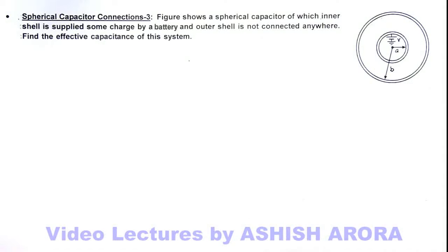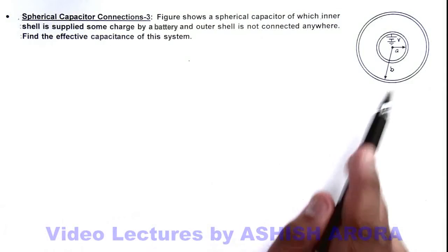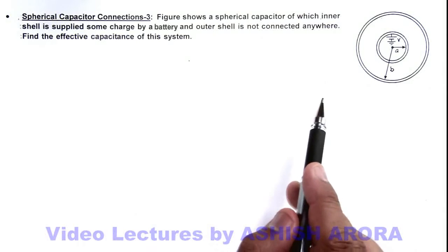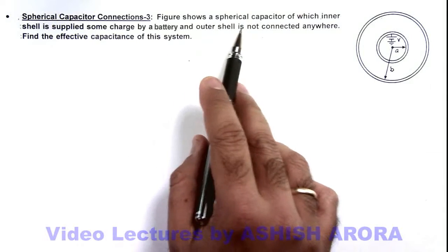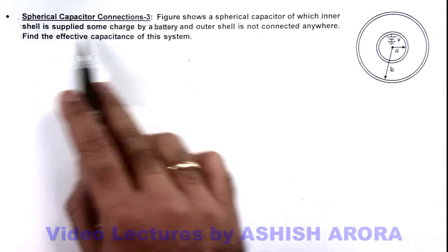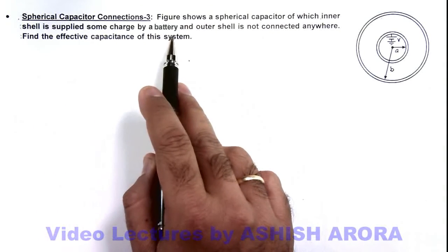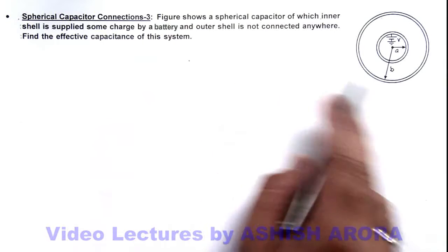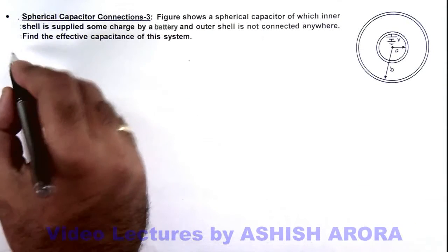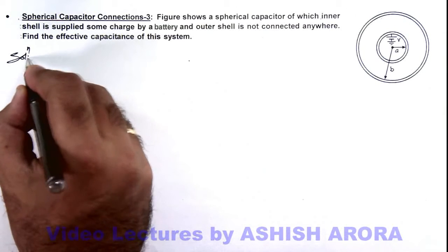In this illustration you can see another connection of a spherical capacitor. The figure shows a spherical capacitor of which inner shell is supplied some charge by a battery and outer shell is not connected anywhere. And again we are required to find the effective capacitance of this system.